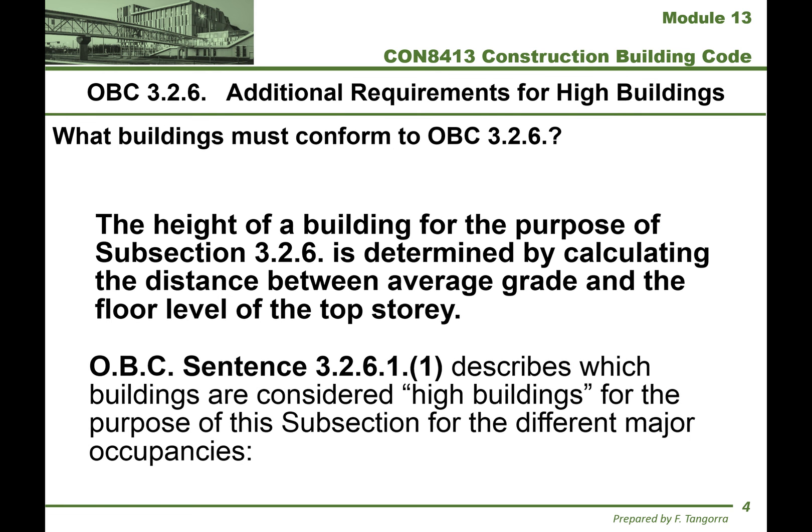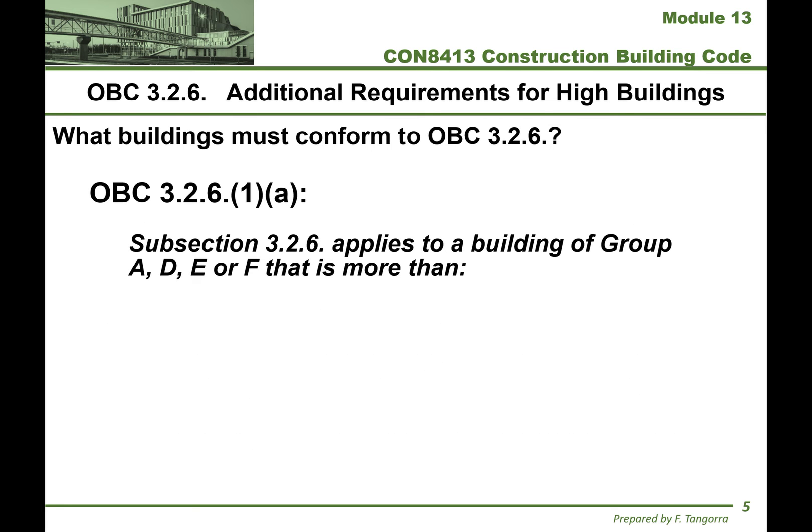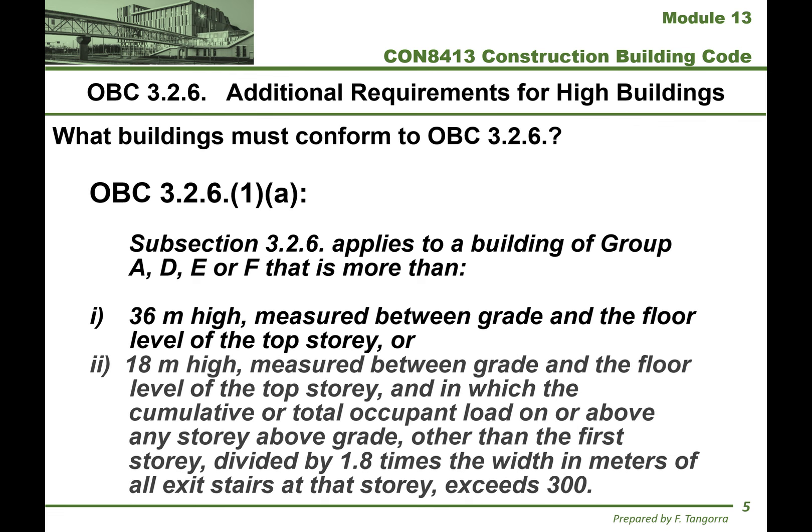Here's what sentence 3.2.6.1.1 actually says — and I'm paraphrasing. High buildings for this subsection depend on occupancies as follows. For groups A, D, E, or F, if the building is 36 meters high or more between grade and the top floor level, it's considered a high building. If it is 18 meters high or more, then you must use a formula that is described in words in the code — I see a 1.8 and a 300, exit stairs, that sort of stuff.